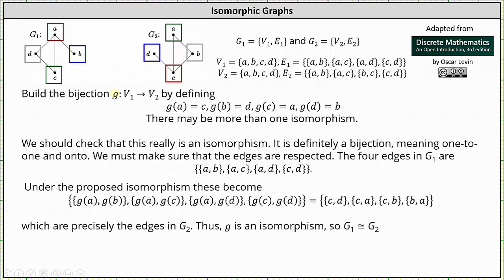So now we'll build a bijection G which maps V1 to V2 by defining G of A equals C, G of B equals D, G of C equals A, and G of D equals B. Now I do want to mention there may be more than one isomorphism.